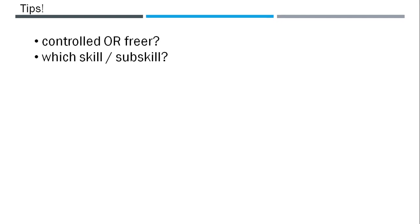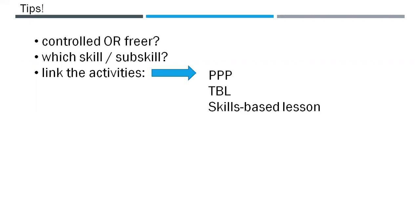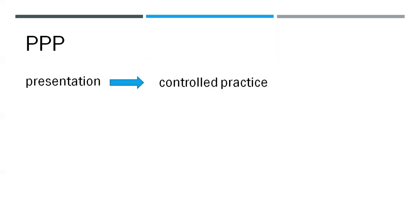Lessons usually consist of a series of linked activities and there are several different ways of linking activities in lessons. We will talk about PPP, TBL and skills-based lessons. PPP is a sequence where first you do the presentation — you present new language, for example explaining what present simple is. Then you do controlled practice like typical gap fill activities. Then you do freer practice like communication — maybe finding out something about partners by asking each other questions or telling stories. That is a typical PPP sequence: presentation, controlled practice and freer practice.